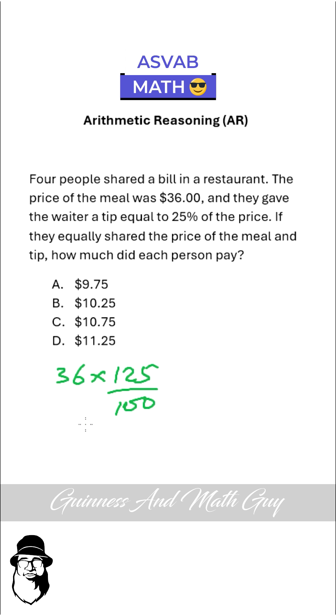If they equally shared the price of the meal and tip, how much did each person pay? Each person means divided by 4, so we multiply by one fourth.